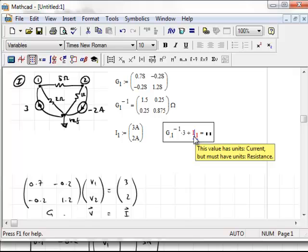It complains because this value has units current, but must have units resistance. Evidently, the operation I'm doing is G inverse times 3, which has units of ohms, plus current, and MathCad is smart enough to know that that won't work. You can't add dissimilar units.